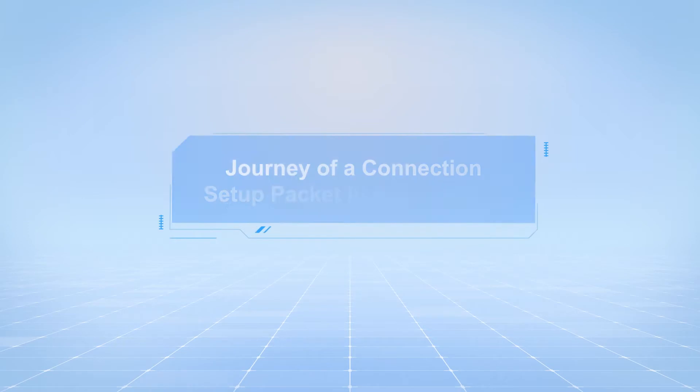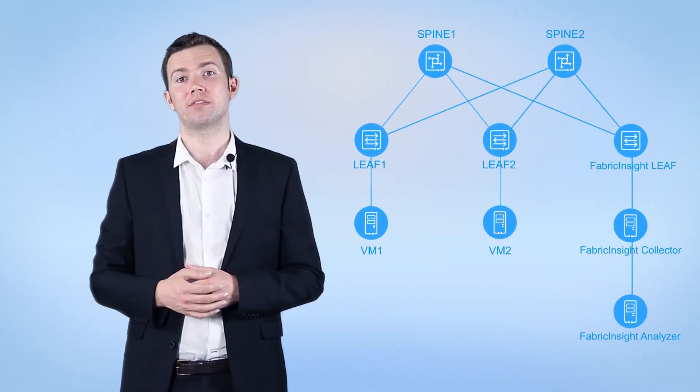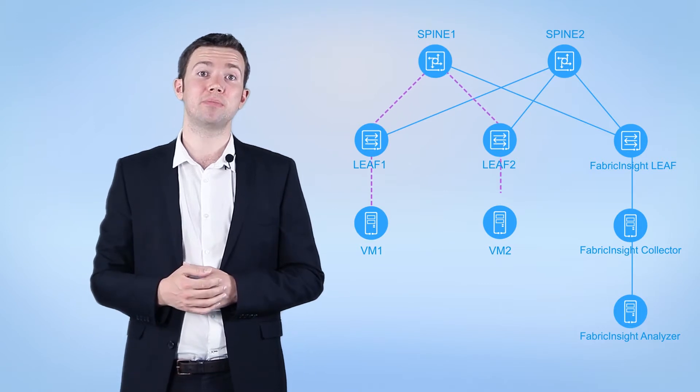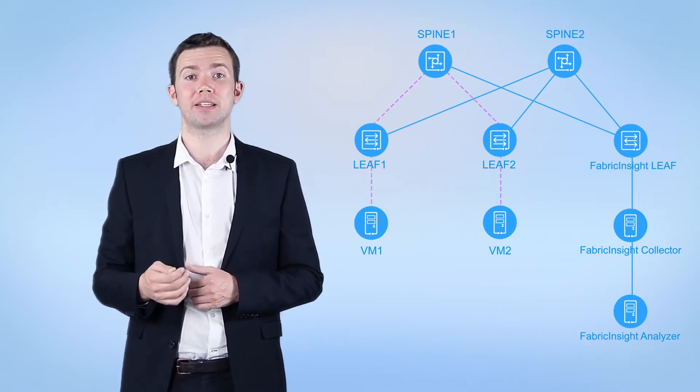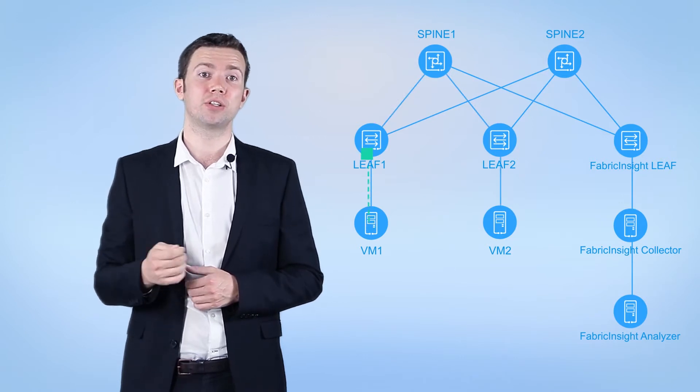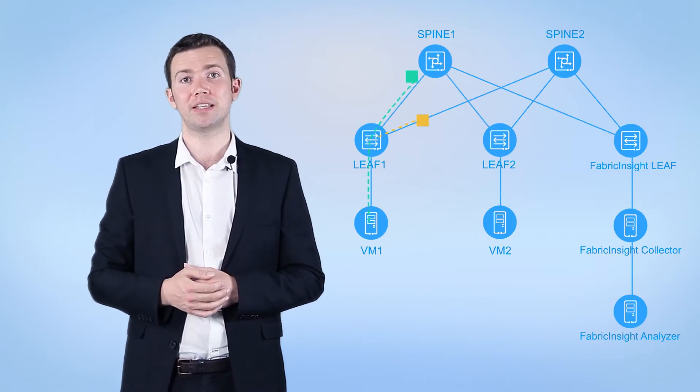Now, I'll use the service flow interaction process to describe the Fabric Insight flow collection in detail. On a data center network, VM1 initiates a TCP connection with VM2. The connection setup packet is transmitted from LEAF1 to SPINE1 and then to LEAF2.